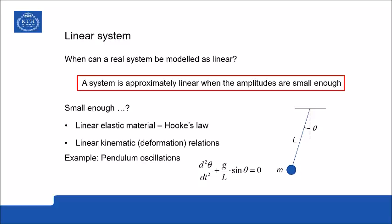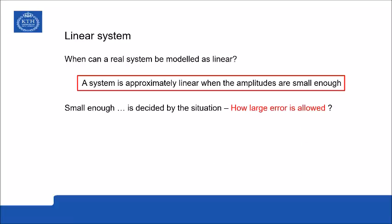So in all situations where the oscillation amplitudes are small enough—so small that we have linear elastic material properties and linear kinematic relations—these situations we can use linear system models. And what is meant with small enough is, of course, decided by the situation: how large an error can we allow when we use the linear model. So in the end, it's an engineering decision to make.